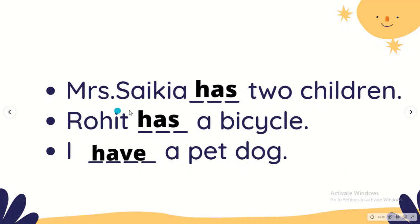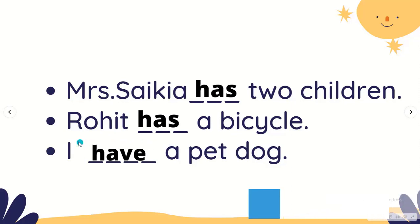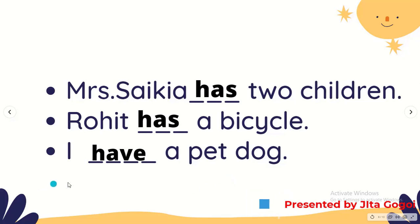Mrs. Saikya has two children — Mrs. Saikya is referred to as 'she', so we use has. Rohit has a bicycle — the bicycle belongs to Rohit; Rohit is 'he', so we use has. The last one: I have a pet dog — 'I' uses have. So here we write have: I have a pet dog.